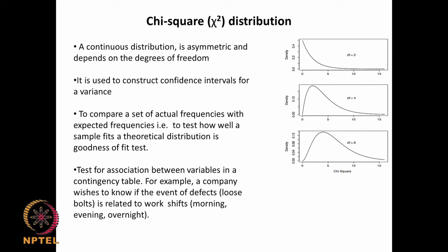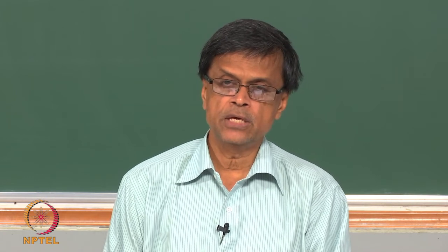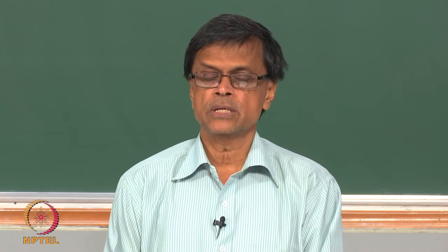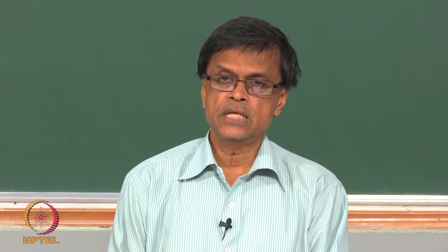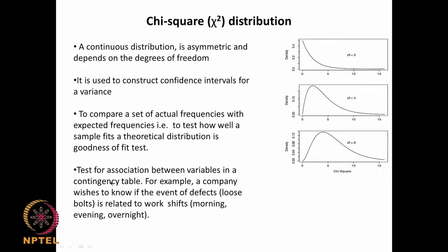We are trying to fit with a theoretical distribution and check for goodness of fit. For instance, I expect 60–70% marks for 10 students, 70–80% for another 10, and above 90% for another 10, but I find different numbers in each range. The question is whether that is a really significant difference.